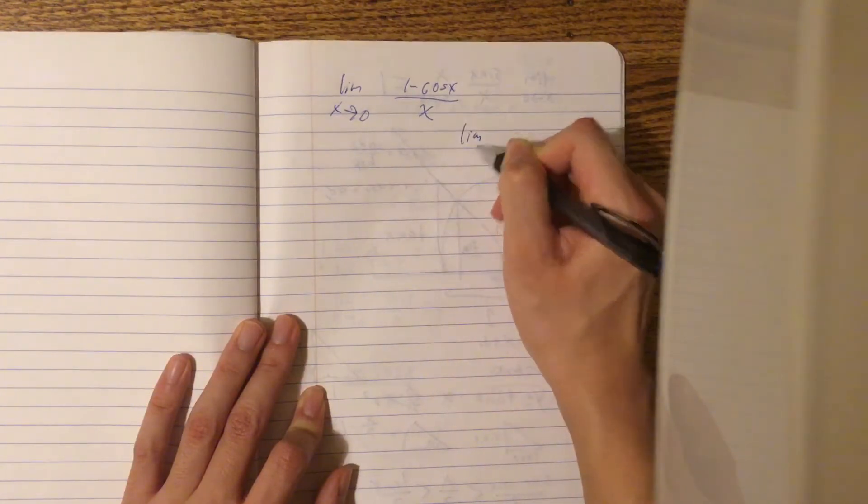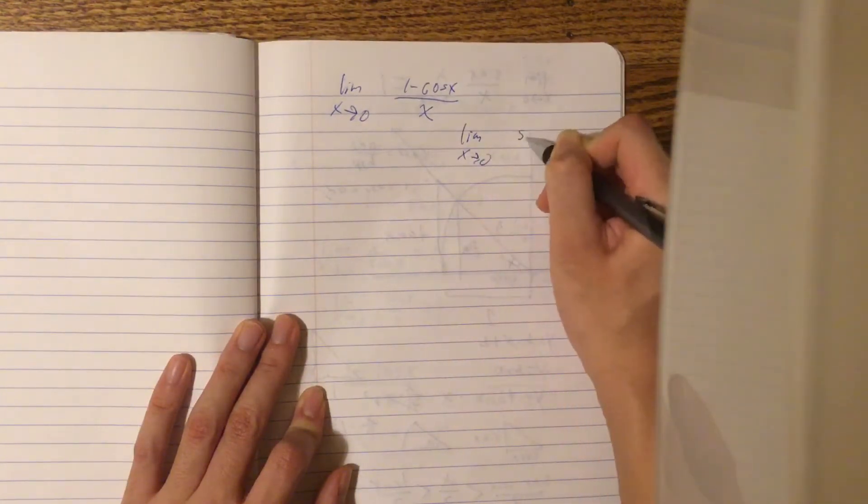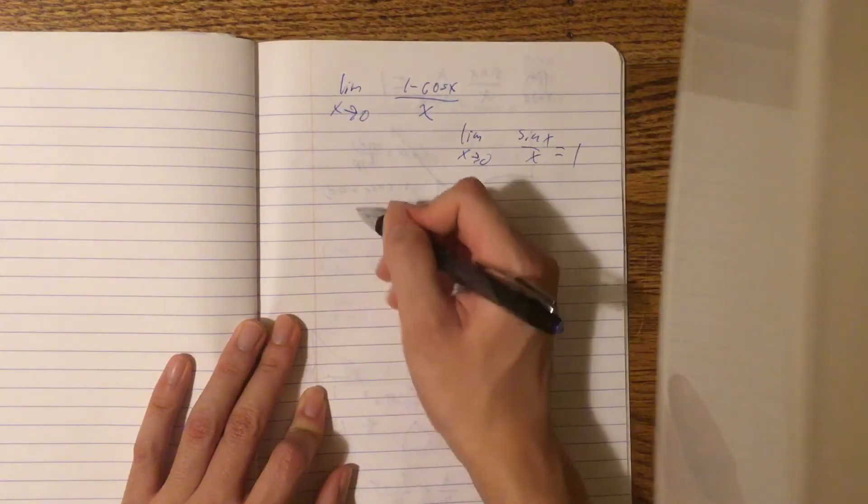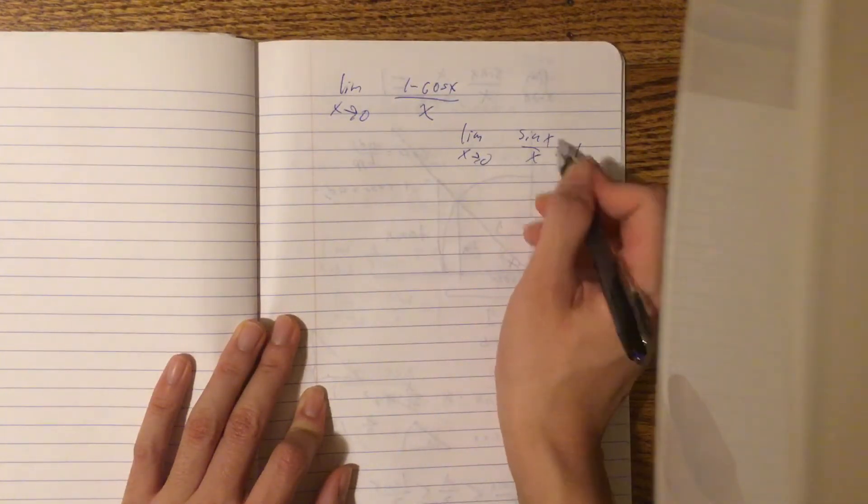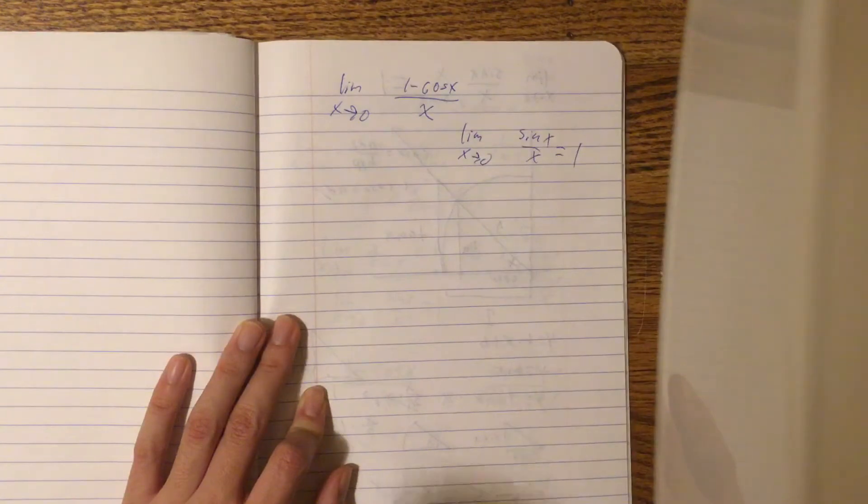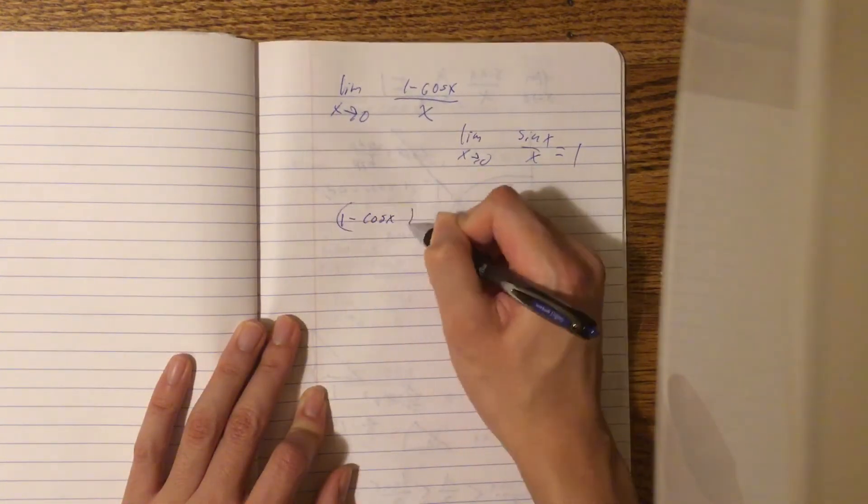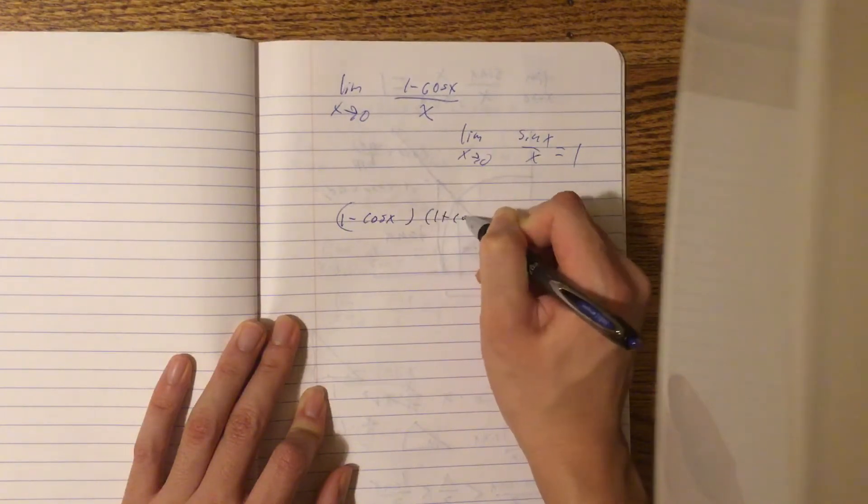We know that the limit as x approaches 0 of (sin x)/x equals 1. So let's try to fit in sin x/x here. What we can do is multiply both the numerator and the denominator by 1 + cos x.